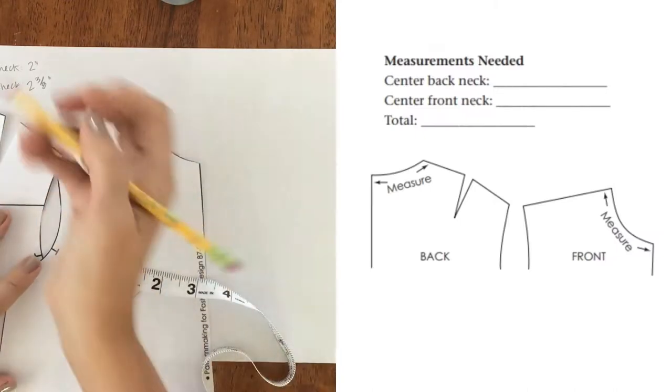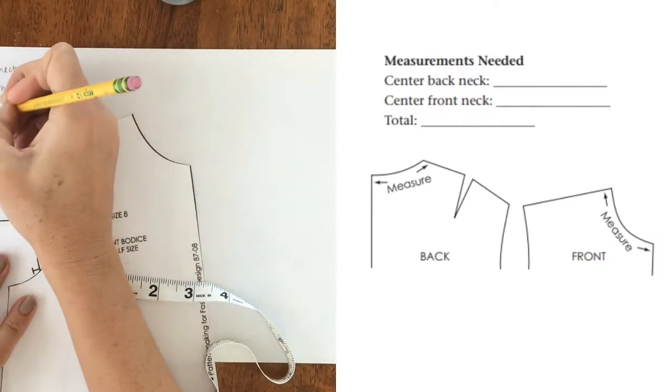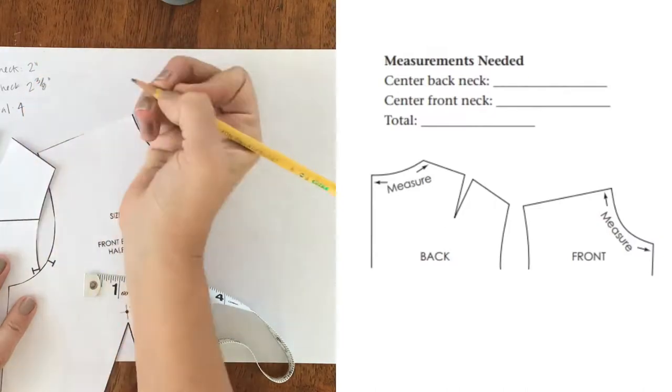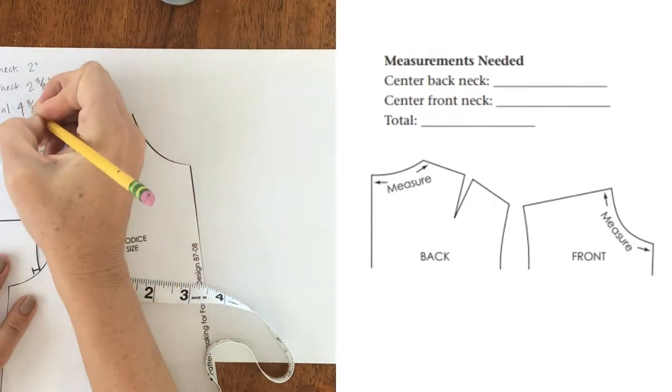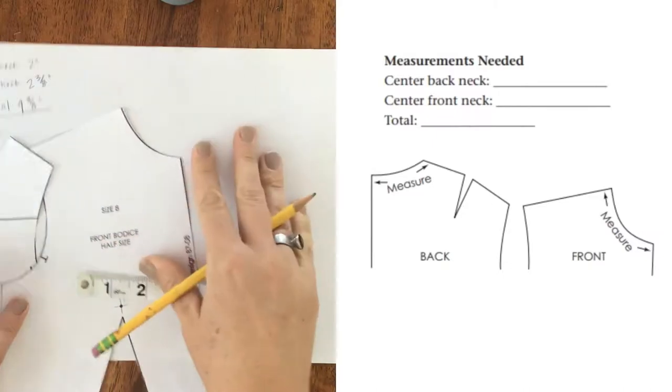Okay, they want me to add it up and write the total. So two plus two is four, and then we have three eighths left over.